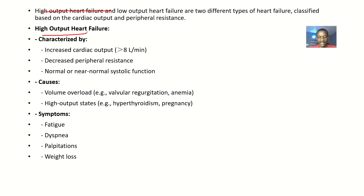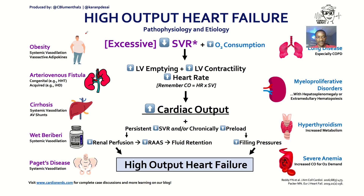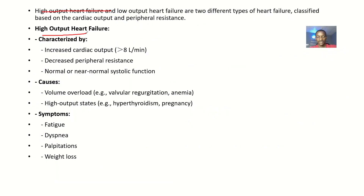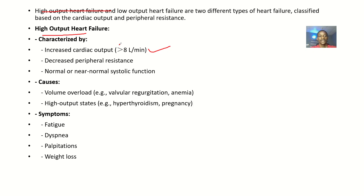Here we have the high output heart failure and here we have the low output heart failure. I'll be talking about these two conditions so when you bring the two concepts together, you get to look at the similarities and the differences. For high output heart failure, the cardiac output is more than eight liters per minute — that's the threshold for increased cardiac output.